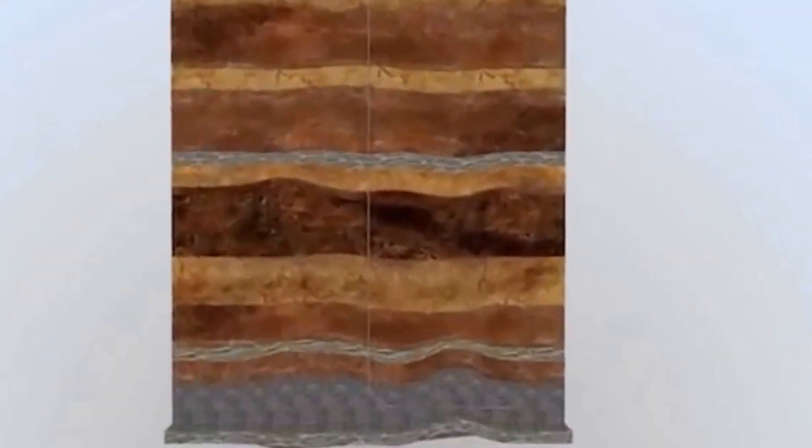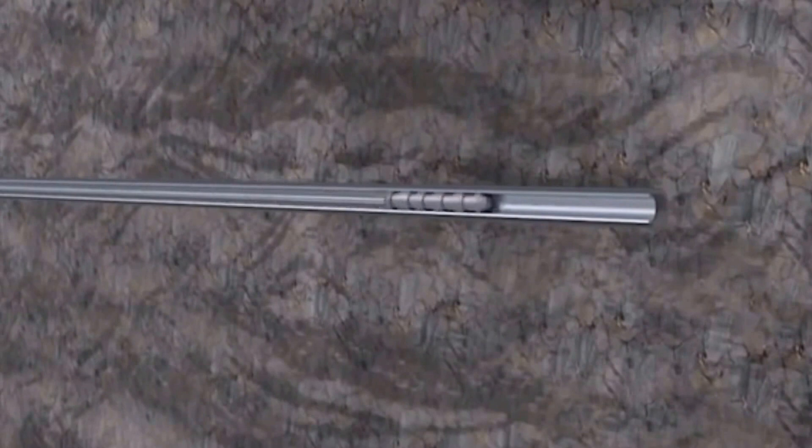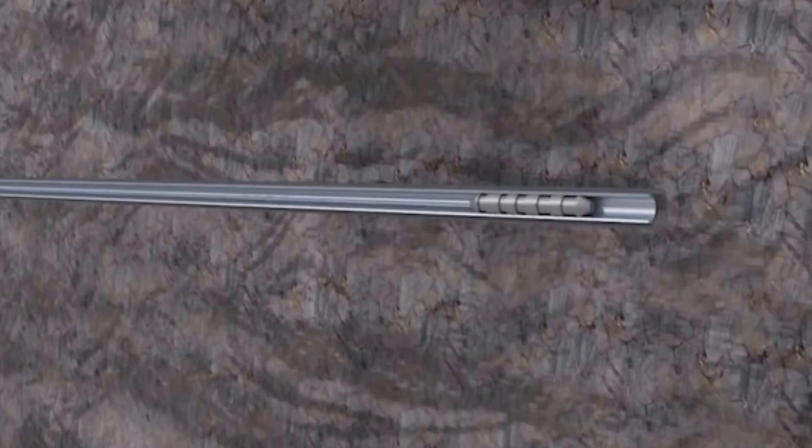The first step in completing a well is the creation of a connection between the final casing and the reservoir rock. This consists of lowering a specialized tool called a perforating gun, which is equipped with shaped explosive charges, down to the rock layer containing oil or natural gas.